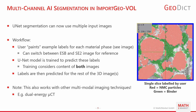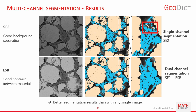This also works with any other multimodal imaging techniques that give you aligned images — for example, dual energy CT images would work in the same way. For the results, you can see the SE2 image with good background separation and the ESB image with good material contrast. In the zoomed upper right image, segmentation based only on a single SE2 channel made some classification errors — some binder voxels were classified as active material. In the image below, using dual-channel segmentation with information from both SE2 and ESB, the binder was classified correctly.